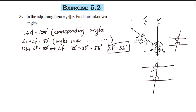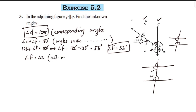Angle F is 55 degrees and we have angle D. Angle F is 55 degrees — alternate angles. Angle F and angle A are equal. Angle C is also equal to this degree. Angle A is 55 degrees by alternate angles.